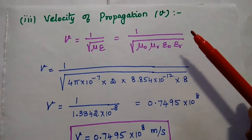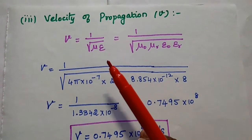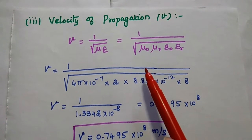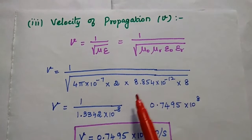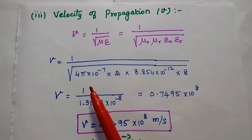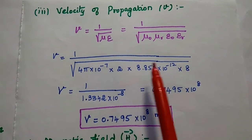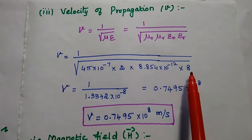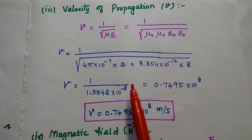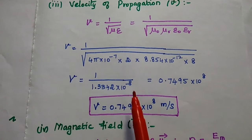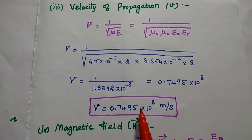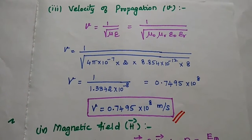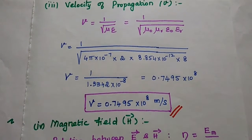Next is the velocity of propagation: v = 1/√(με) = 1/√(μ_naught μ_r ε_naught ε_r). Substituting mu_naught = 4π × 10⁻⁷, mu_r = 2, epsilon_naught = 8.854 × 10⁻¹², and epsilon_r = 8, we simplify to get v equals 0.7495 × 10⁸ meters per second.